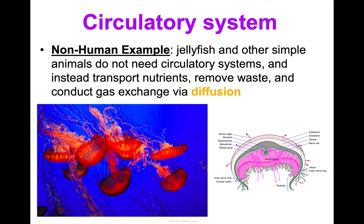The muscular system's main function is movement and stabilization. Key structures are your skeletal, smooth, and cardiac muscles. Fun fact: typically the strongest and largest muscle in most animals is in the jaw, and the smallest is in your inner ear. Muscles range from really large — like in your legs — to super tiny — like in your ear. A cool non-human example: bat larynx muscles are some of the quickest muscles that exist, able to contract 200 times per second.